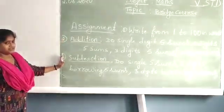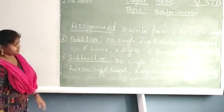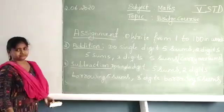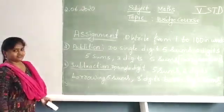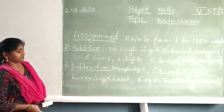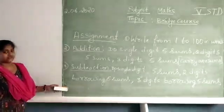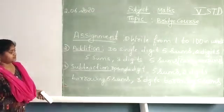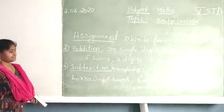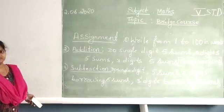Third topic is subtraction: 2 single digits — 5 sums; 2 digits with borrowing — 5 sums; 3 digits with borrowing — 5 sums. Direct sums should not be done. You have to borrow and do the sums.